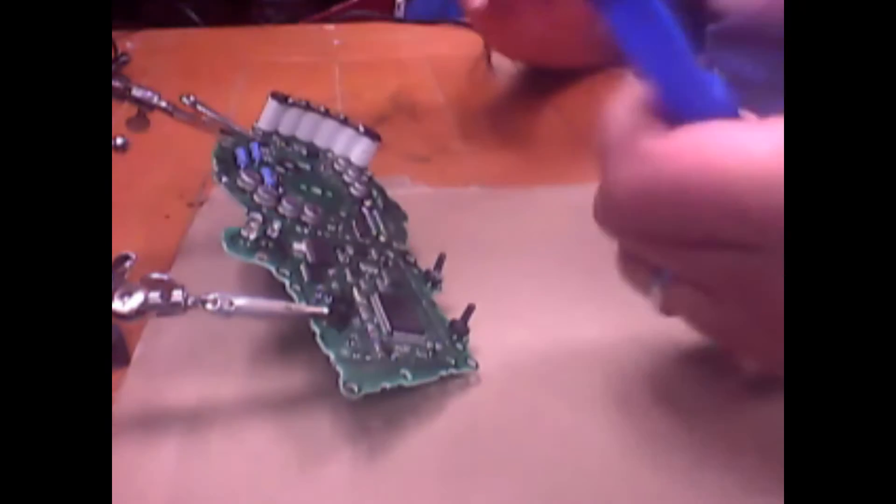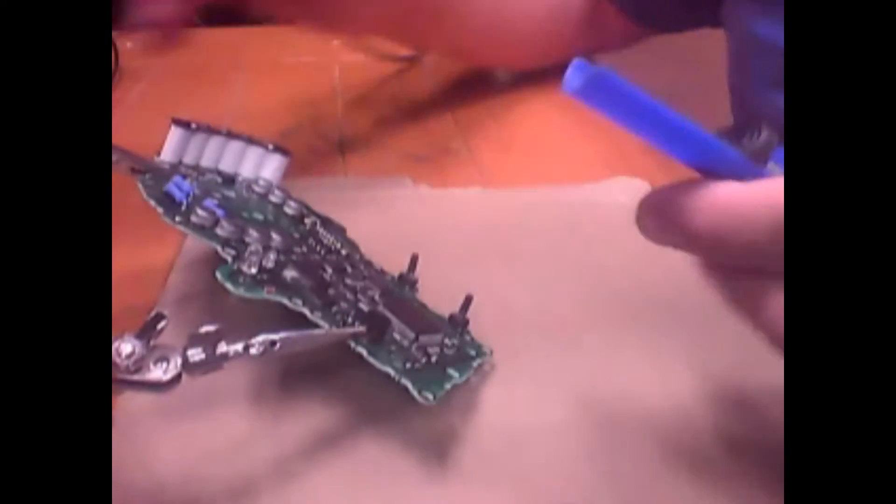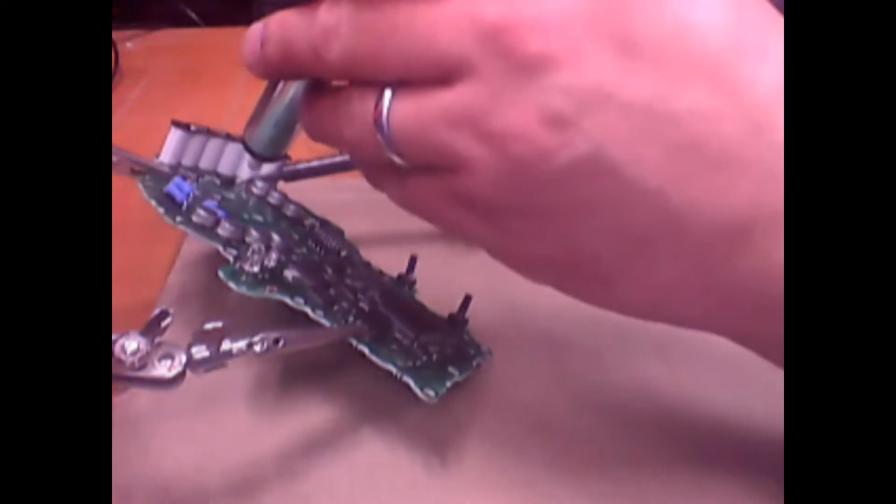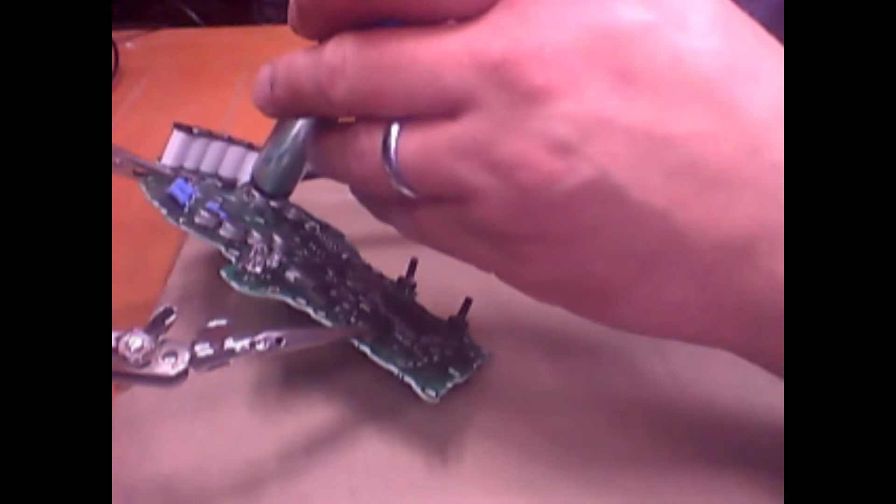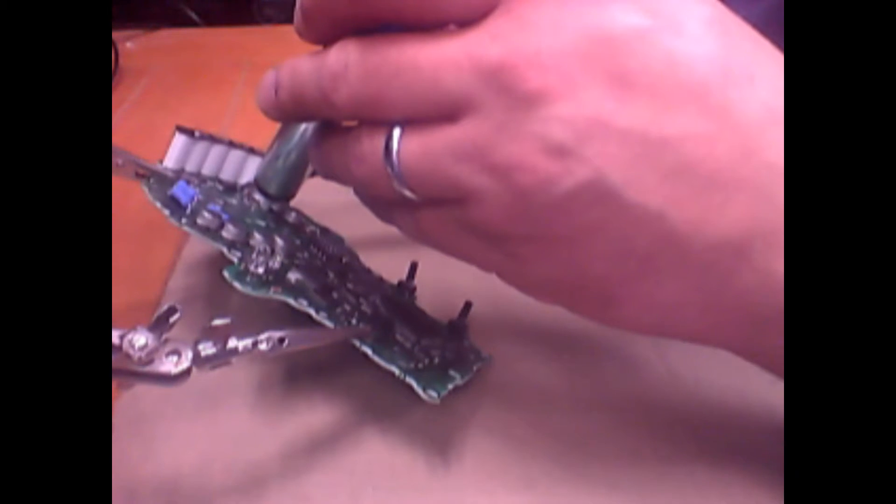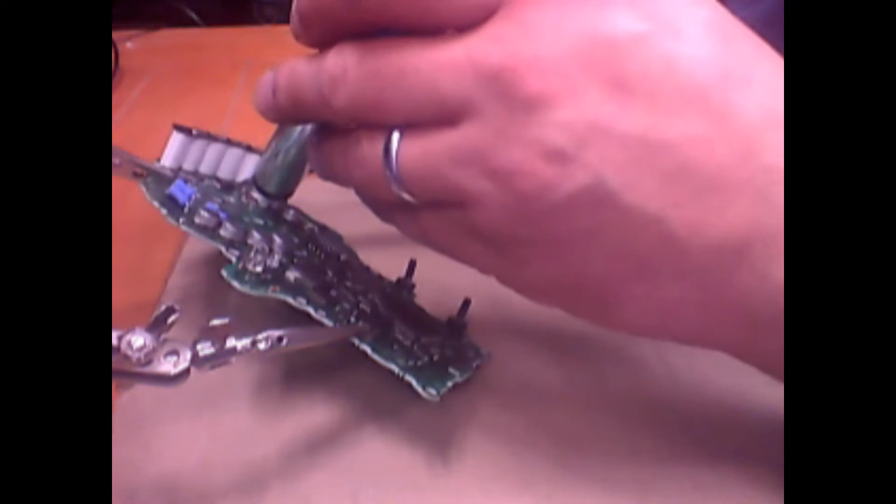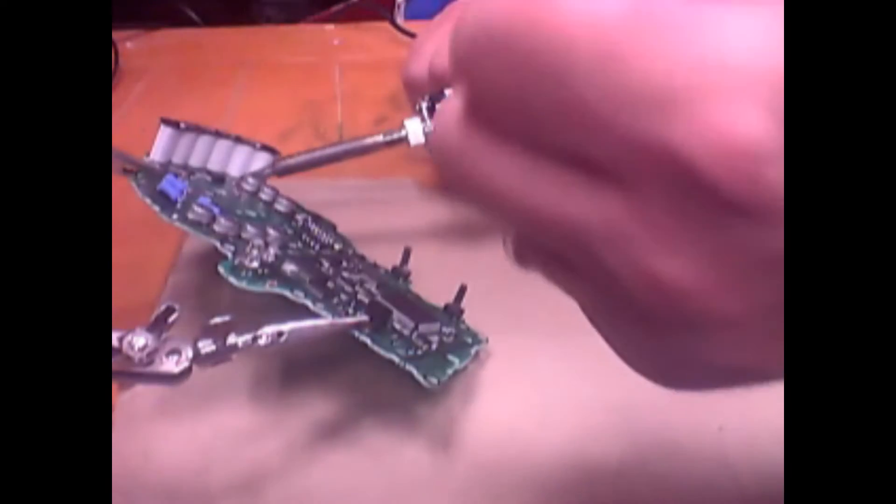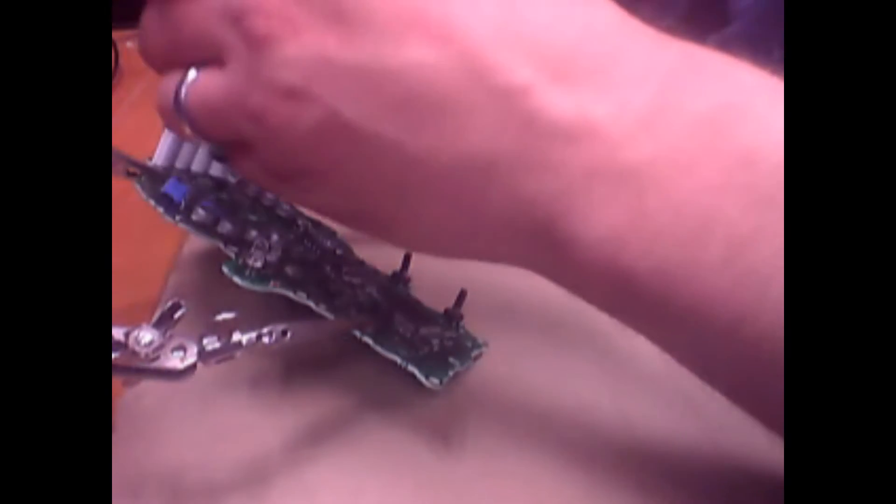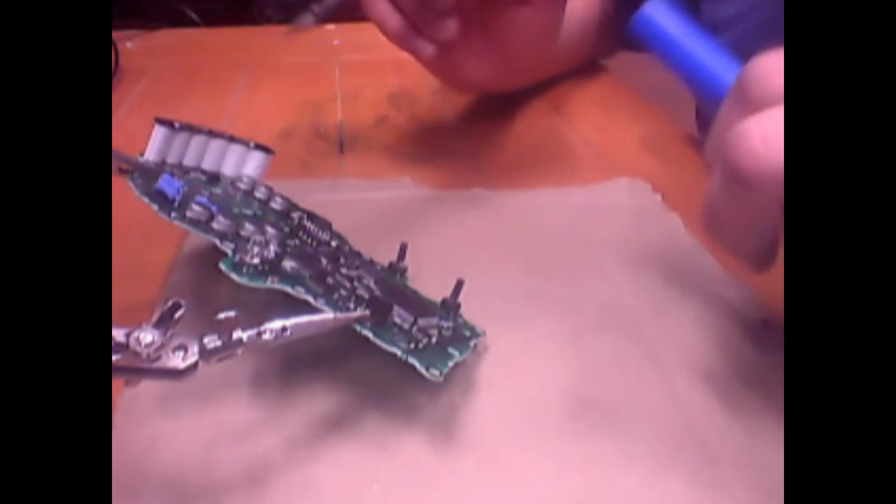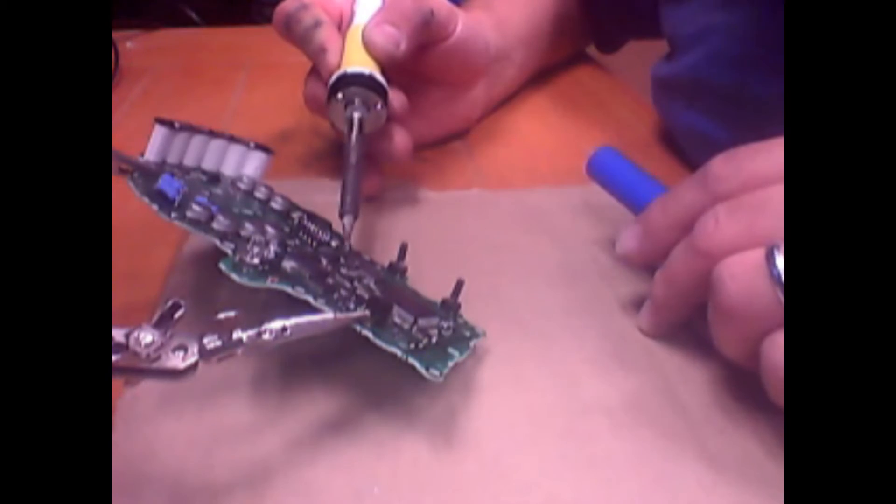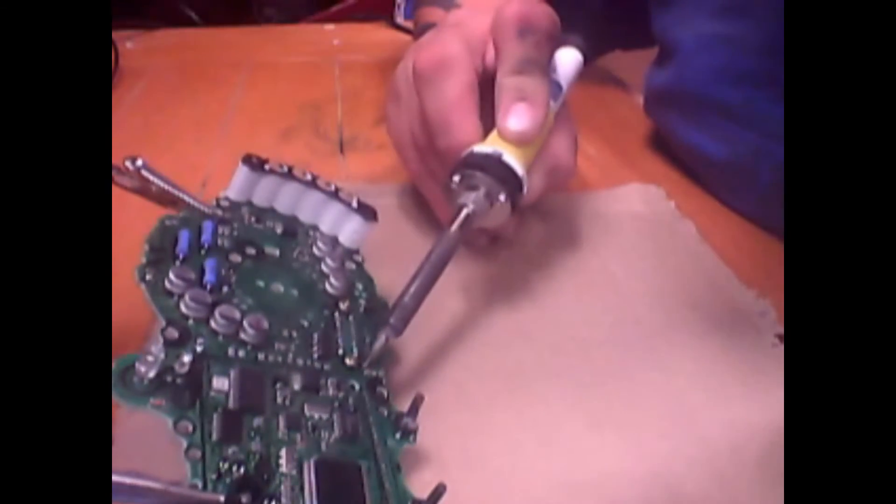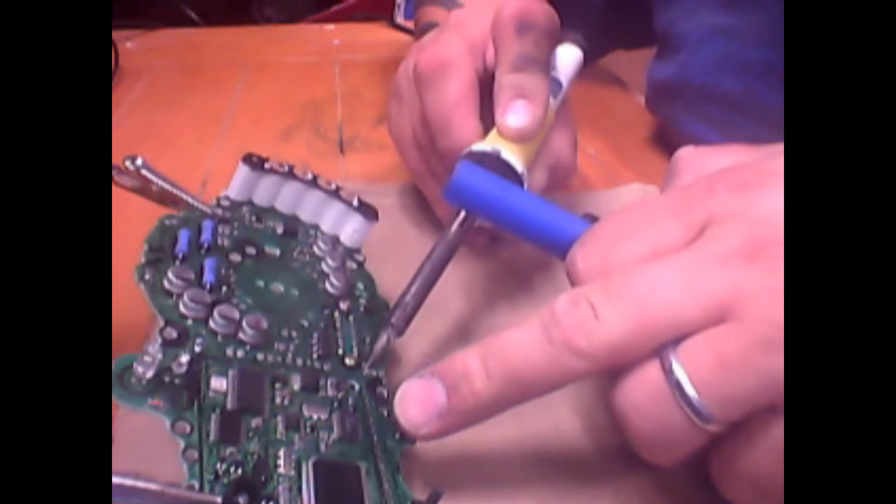We need something to hold the circuit board steady. This is completely optional, but they are handy. So you apply the soldering iron to the contact point. Get the solder sucker as close as you can to the contact point before pressing the trigger.